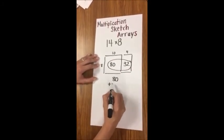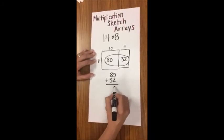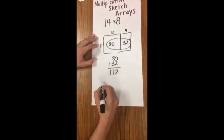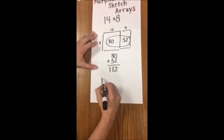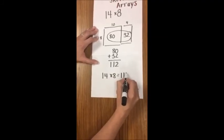So 80 plus 32 is 112. So 14 times 8 equals 112.